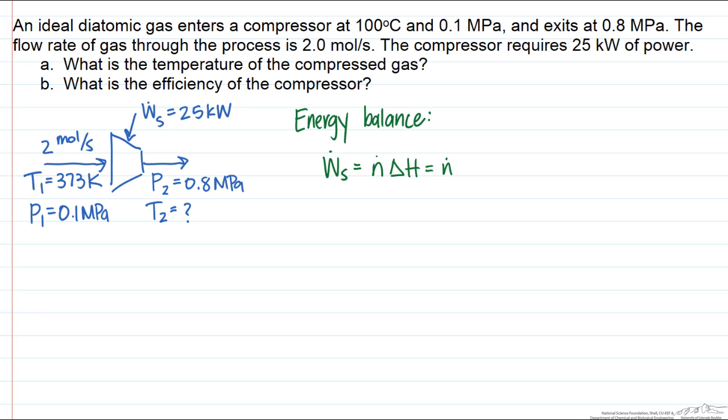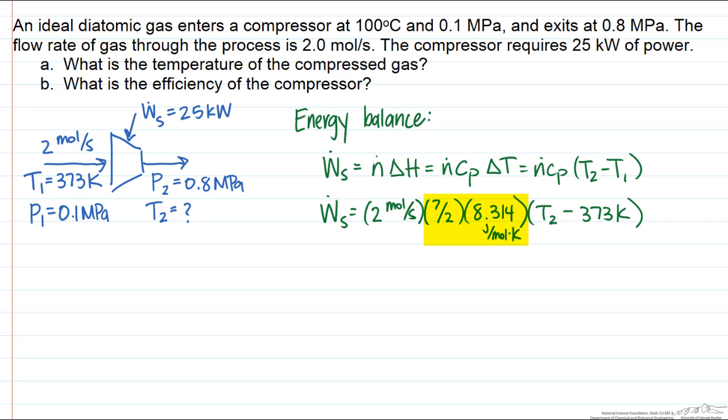This fluid is an ideal gas. We can compute the change in enthalpy in terms of the heat capacity times the change in temperature. And here the constant pressure heat capacity, because it's a diatomic ideal gas, 7.5 times the gas constant, which is 8.314 joules per mole Kelvin.